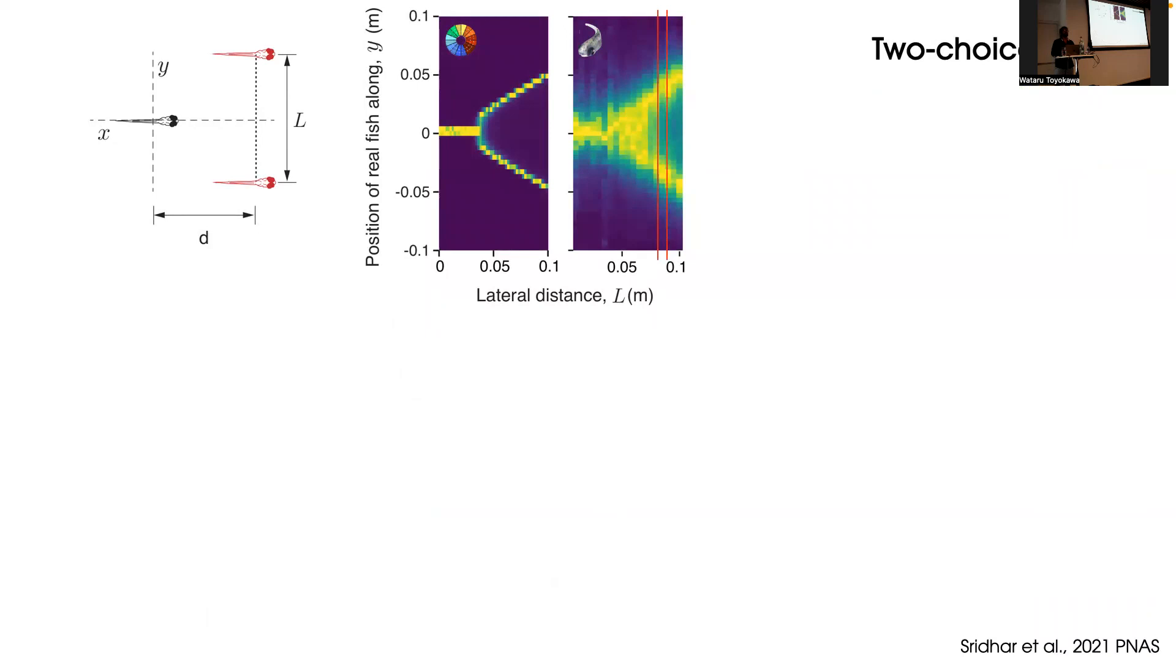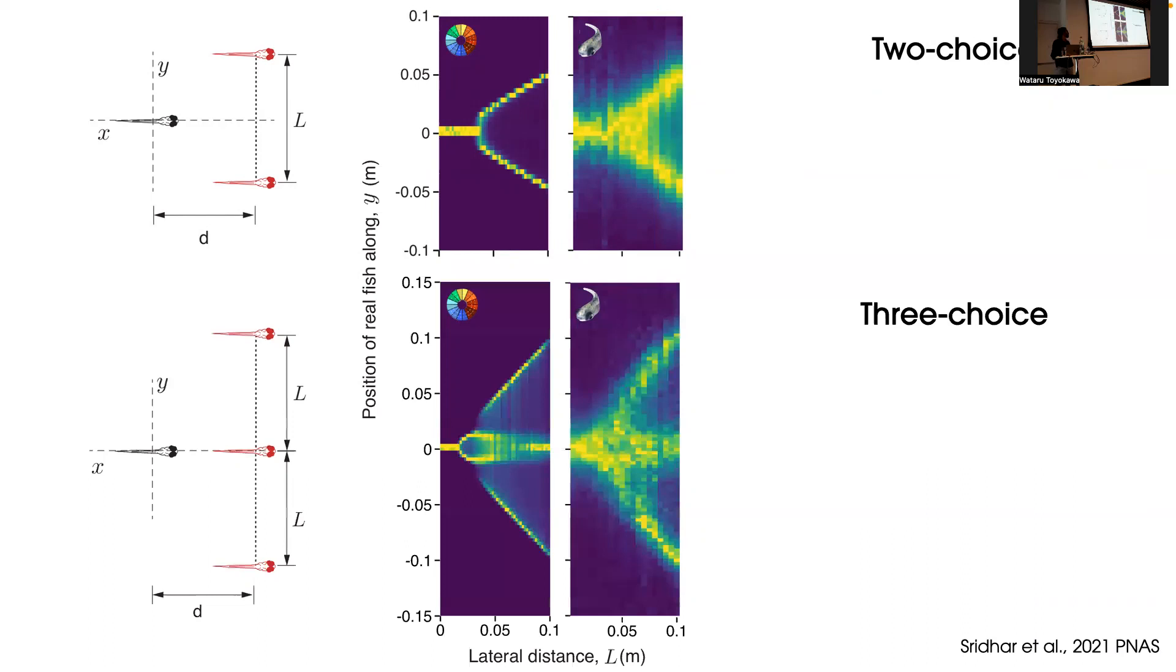For three options, once again we find that the fish will reduce the three choice decision to two binary decisions. This looks different from what you saw with the insects because of the data being represented in this moving frame of reference, but it's exactly the same model.